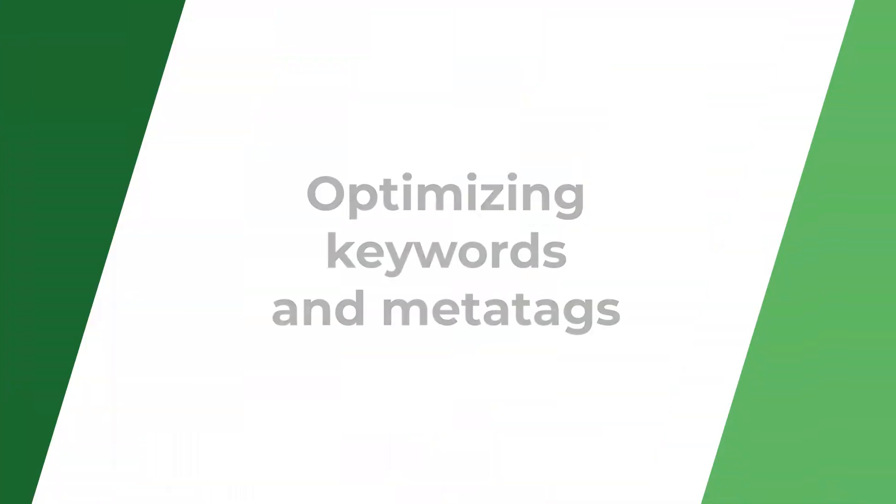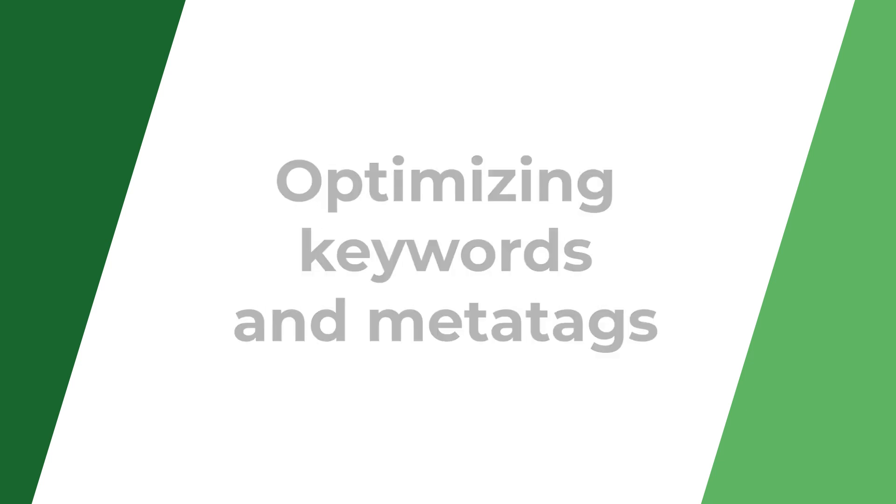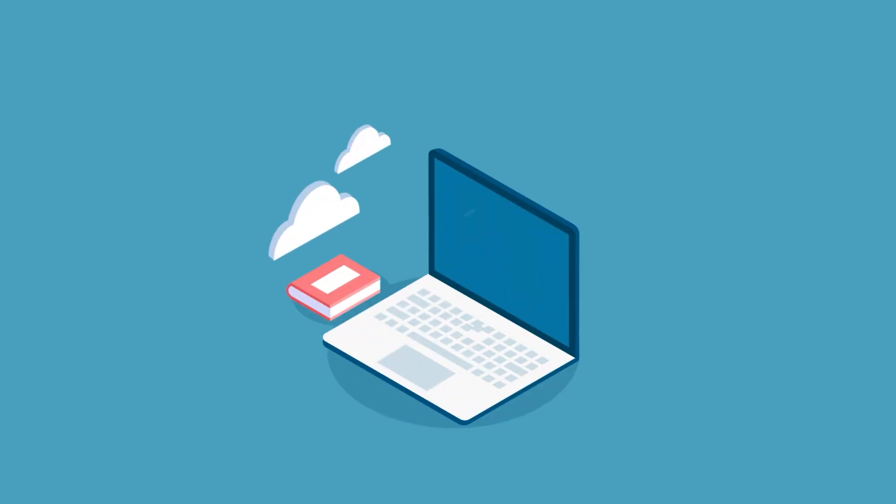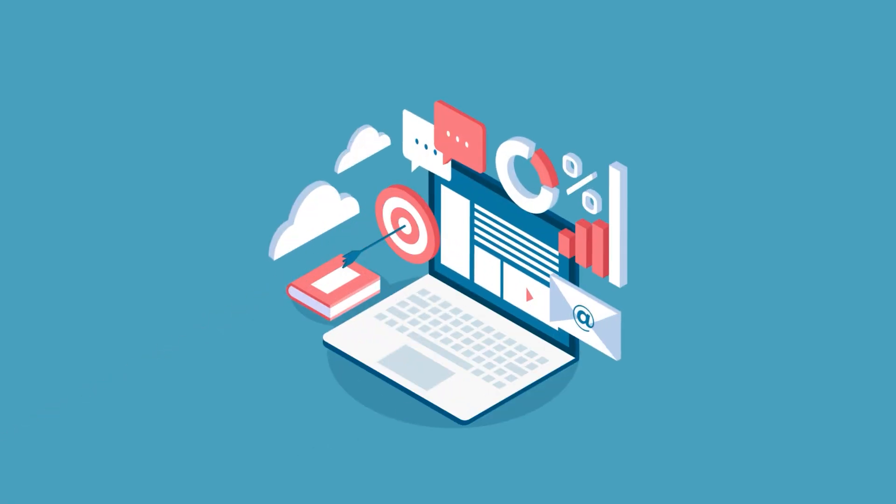Number five: optimizing keywords and metadata. To make your article easier to find, don't forget to optimize your keywords, title, and abstract. Keywords should reflect the main points of your work. This helps databases like Scopus and Google Scholar better understand what your article is about, so choose terms that closely match your topic.